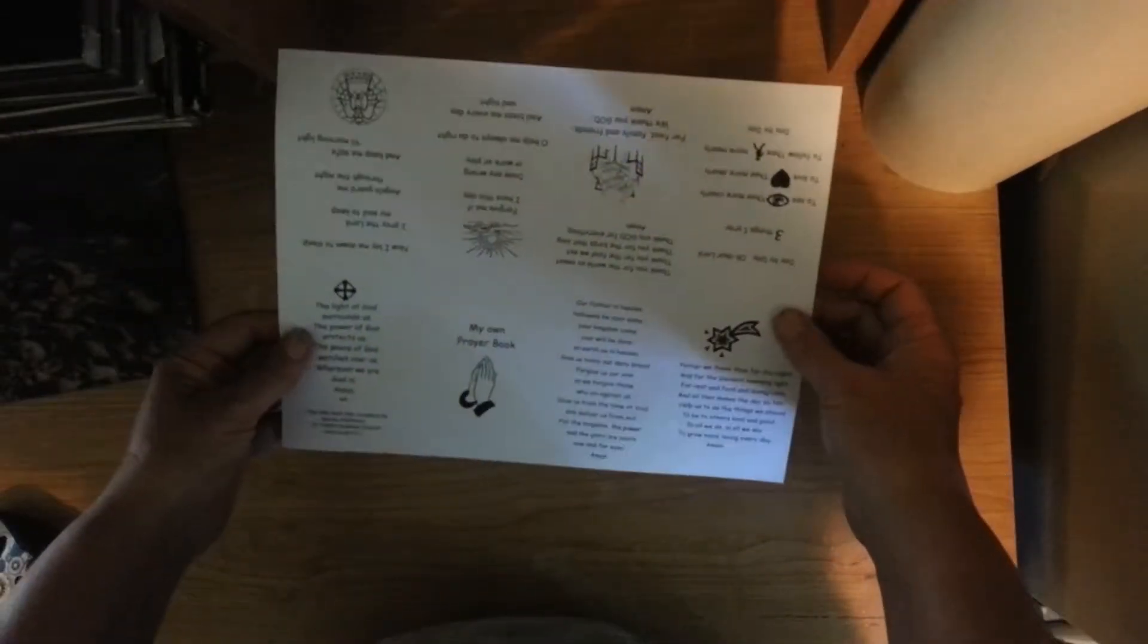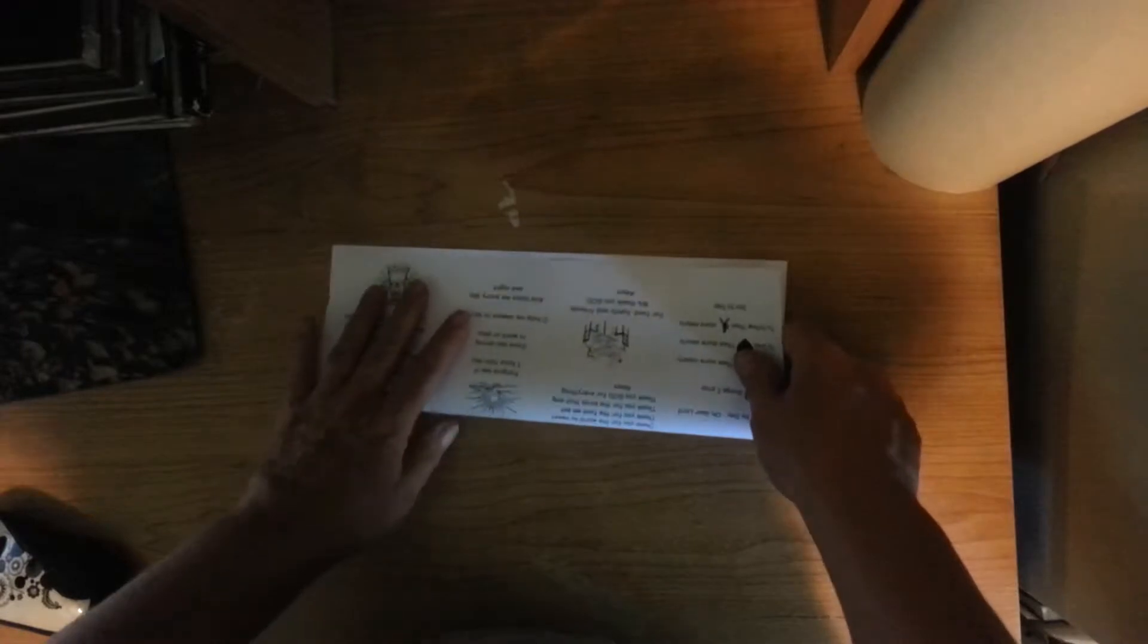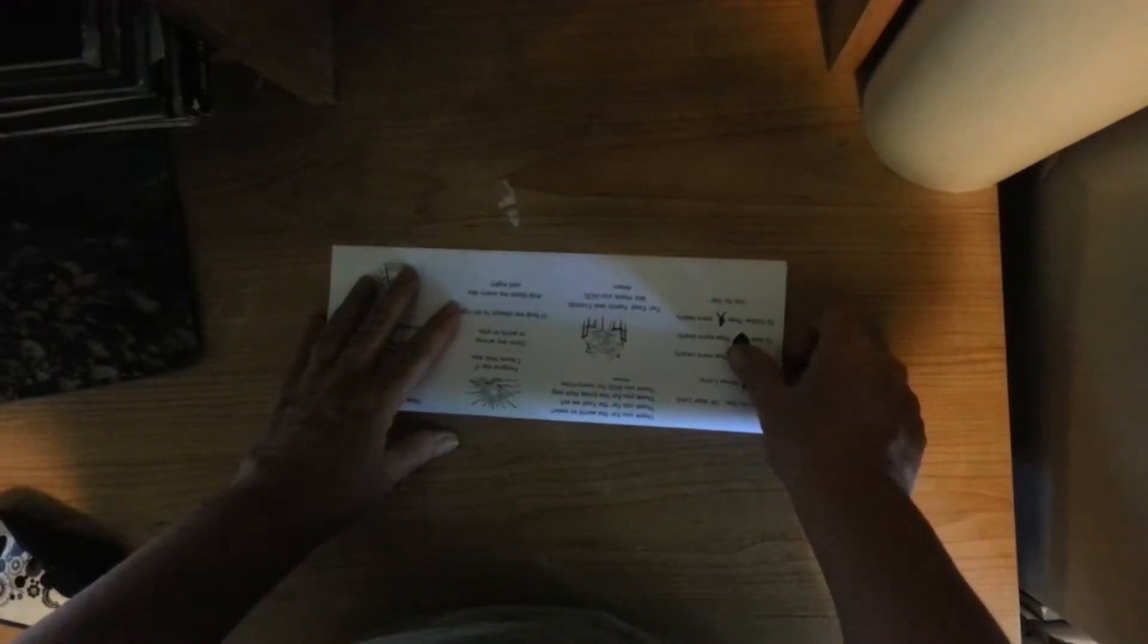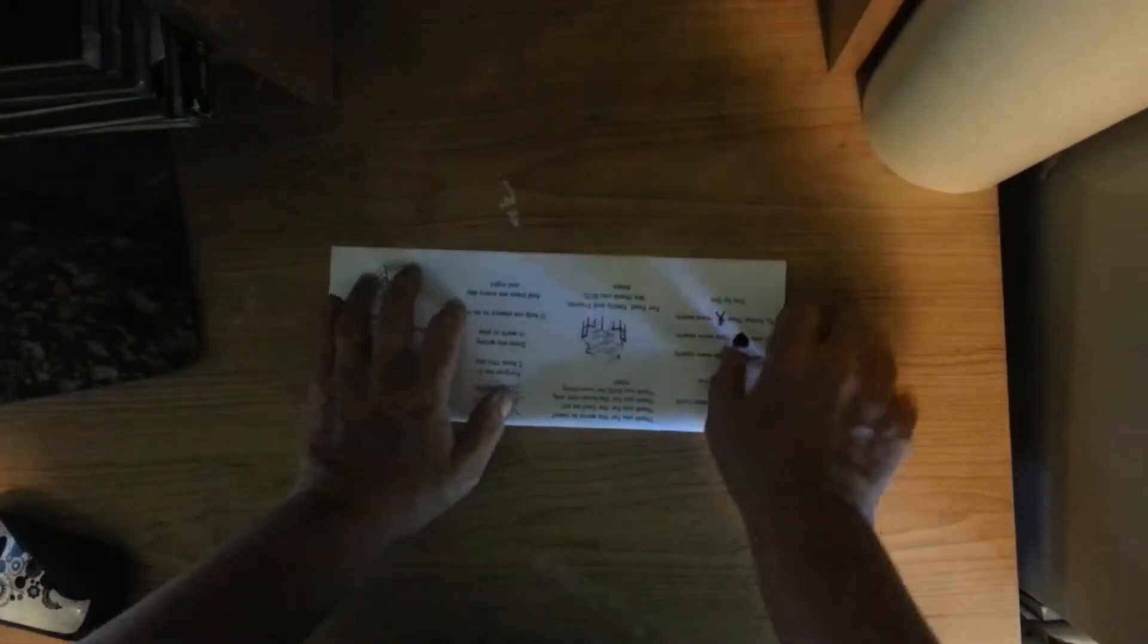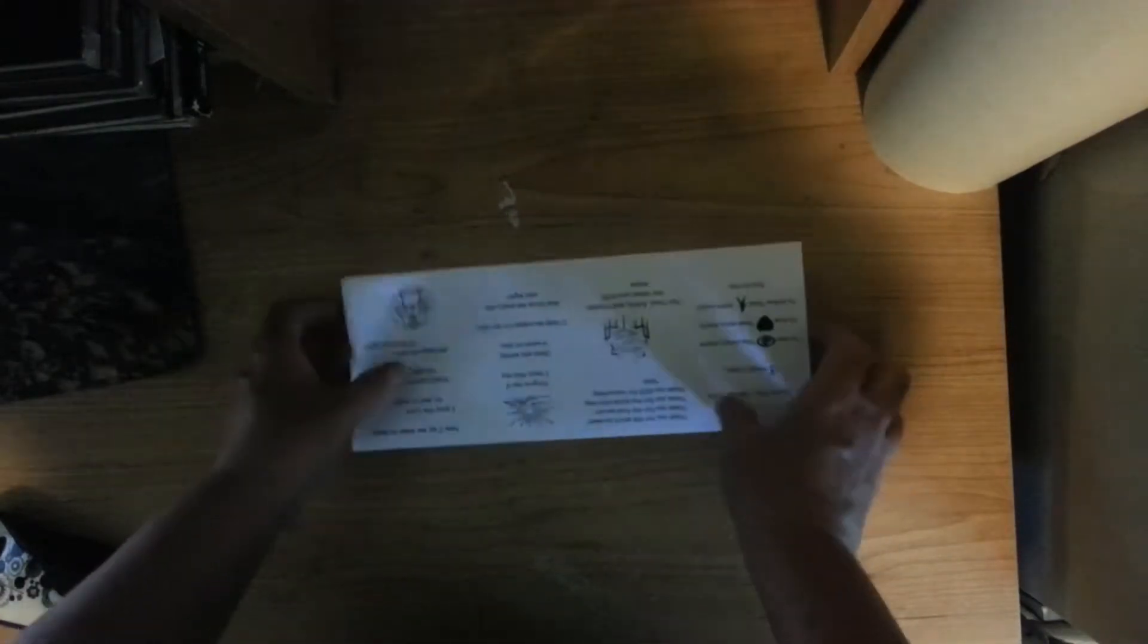I'm going to show you how to fold this little book that was created by a member of our congregation, Barney Robinson. So, I'm going to fold it in half.